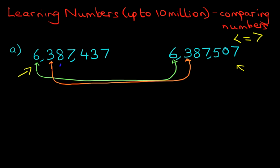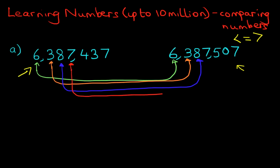Now let's have a look at the next one. We're going to compare the ten thousands: we've got 8 here, and the ten thousands over here is also 8, so they're the same. We still cannot tell which number is larger. Now let's compare the thousands: we've got 7 over here, and the thousands of the number to the right is also 7 — again, the same. We still cannot tell which number is larger and which is smaller.